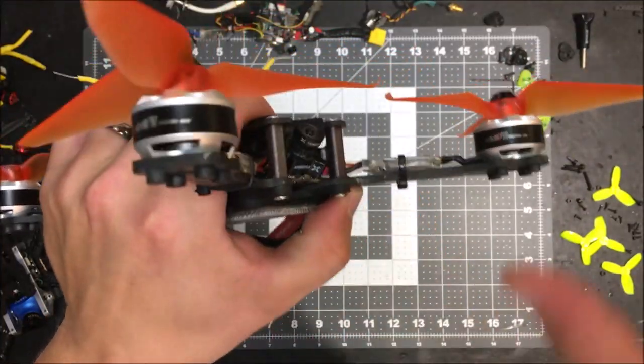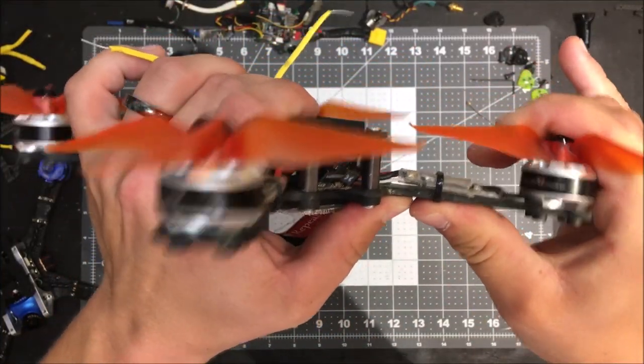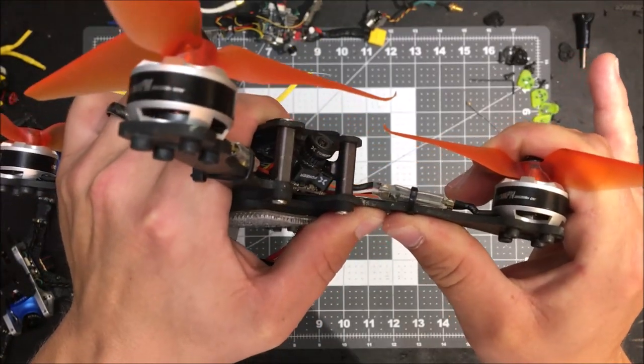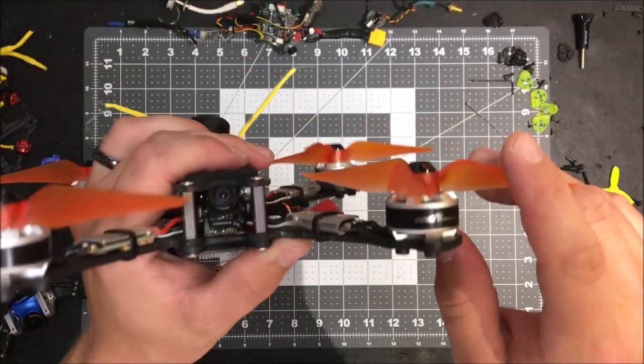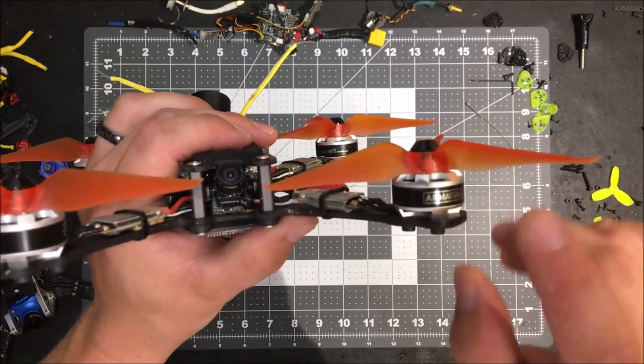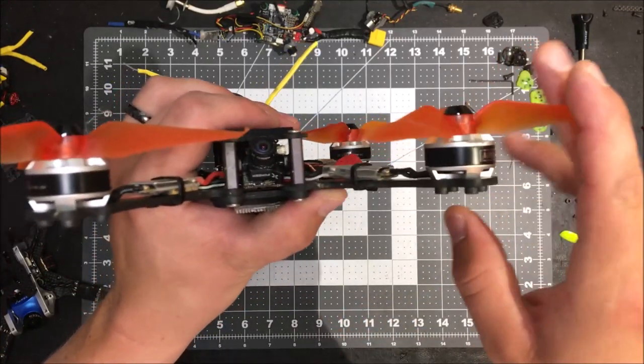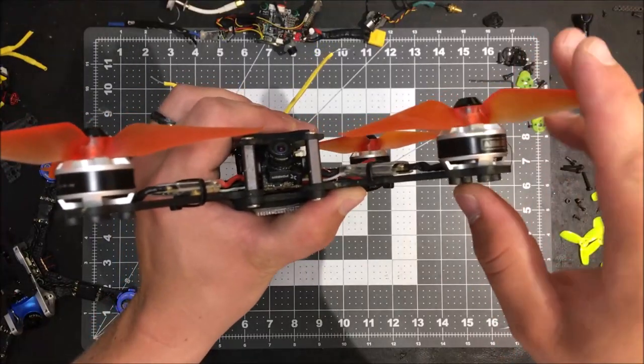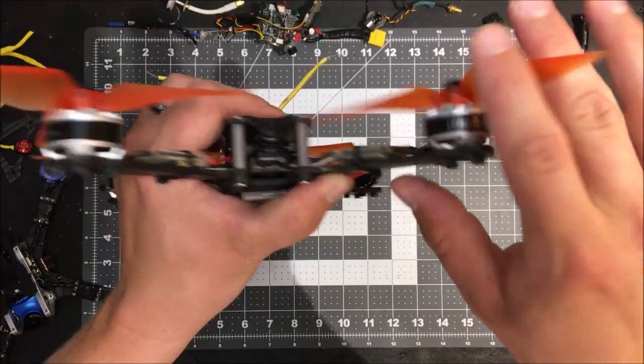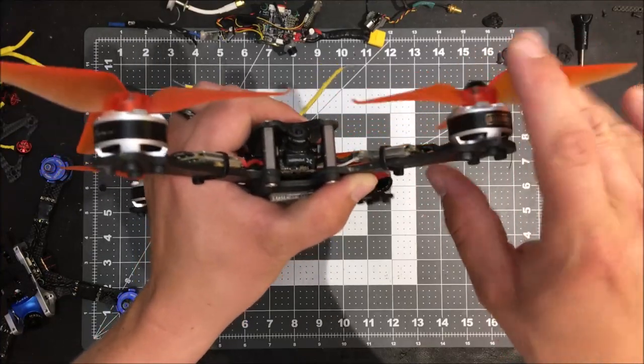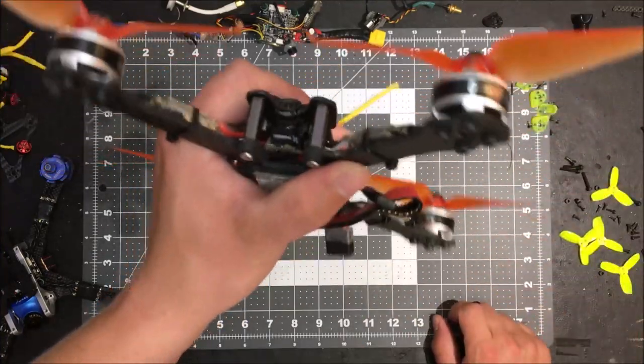there's some delaminating right there in the arm. It took a pretty substantial crash there. And then also this motor here, as you can see right there, is actually where it took the impact and there's a lot of grind right there. I don't know if the magnets, if there's a dent, if the magnets are too close or what, but there's a lot of hang up right there.